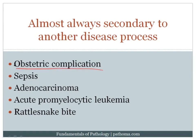In obstetric complications, amniotic fluid contains tissue thromboplastin, a strong activator of the coagulation cascade. If amniotic fluid leaks into the mother's circulation, it can activate the cascade via tissue thromboplastin. Sepsis can also cause DIC in two ways: endotoxin from bacterial walls activates the coagulation cascade, and macrophages produce cytokines like IL-1 and TNF in response to infection, which can also indirectly activate the cascade. Metastatic adenocarcinoma can cause DIC as well, with mucin from the tumor activating the coagulation cascade.